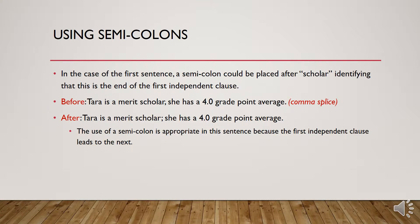The previous slide mentioned that adding another form of punctuation could correct a comma splice, so it's important to look at the use of semicolons. In the case of the first sentence, a semicolon could be placed after 'scholar,' identifying that this is the end of the first independent clause. Before: 'Tara is a merit scholar, she has a 4.0 grade point average.' After: 'Tara is a merit scholar; she has a 4.0 grade point average.' The use of a semicolon is appropriate here because the first independent clause leads to the next.